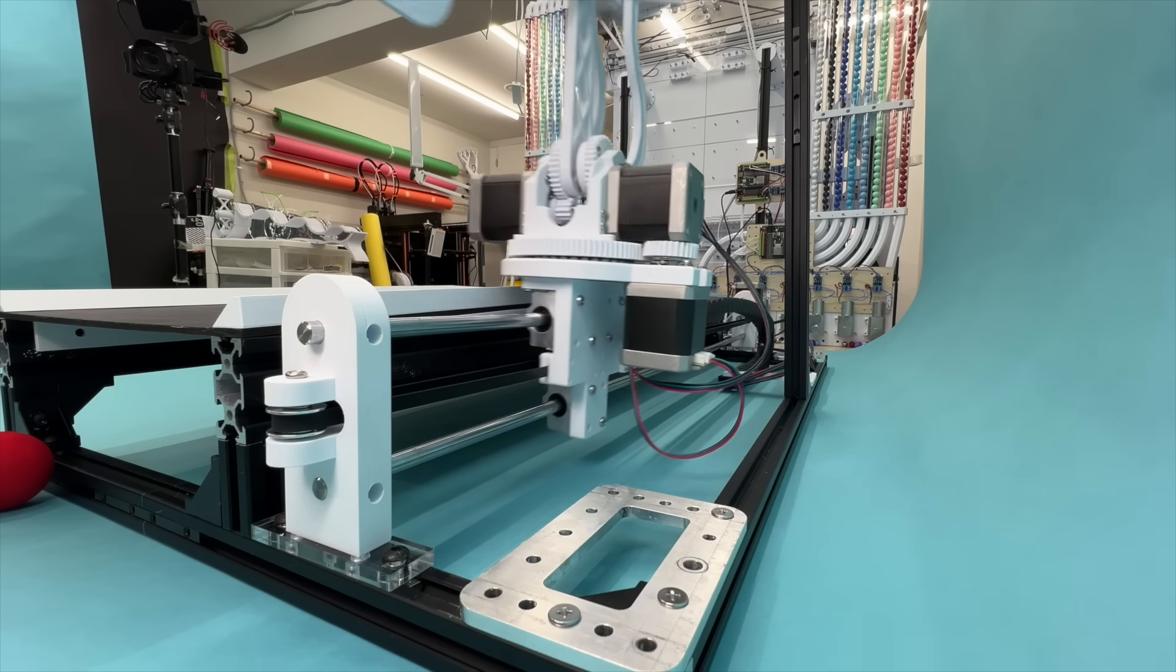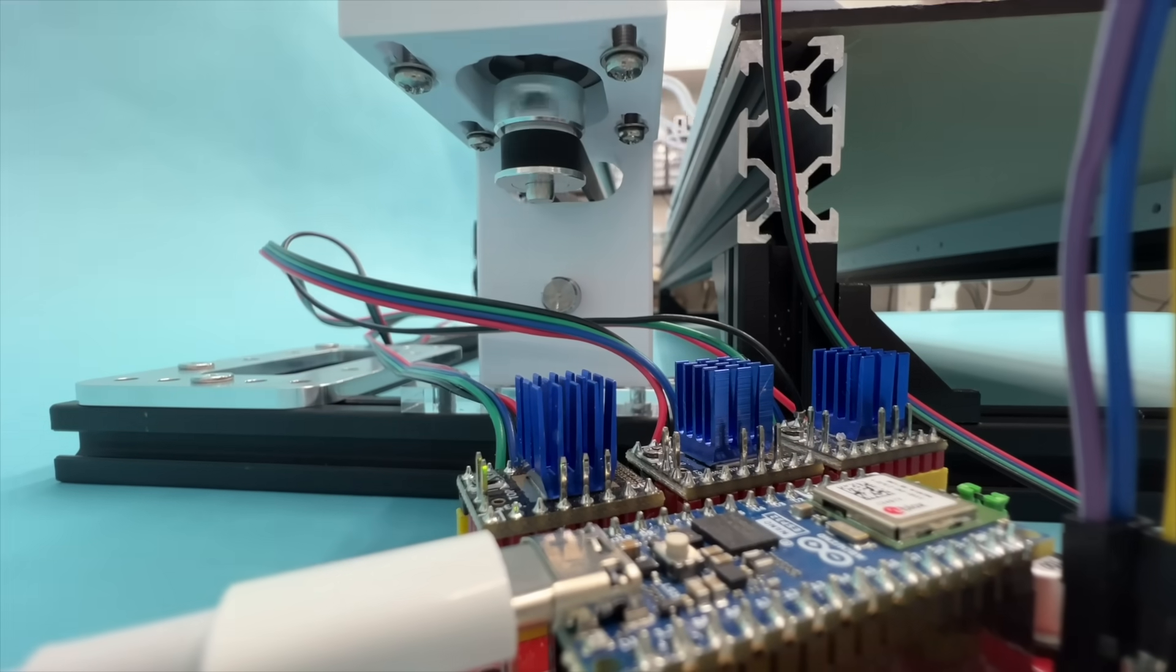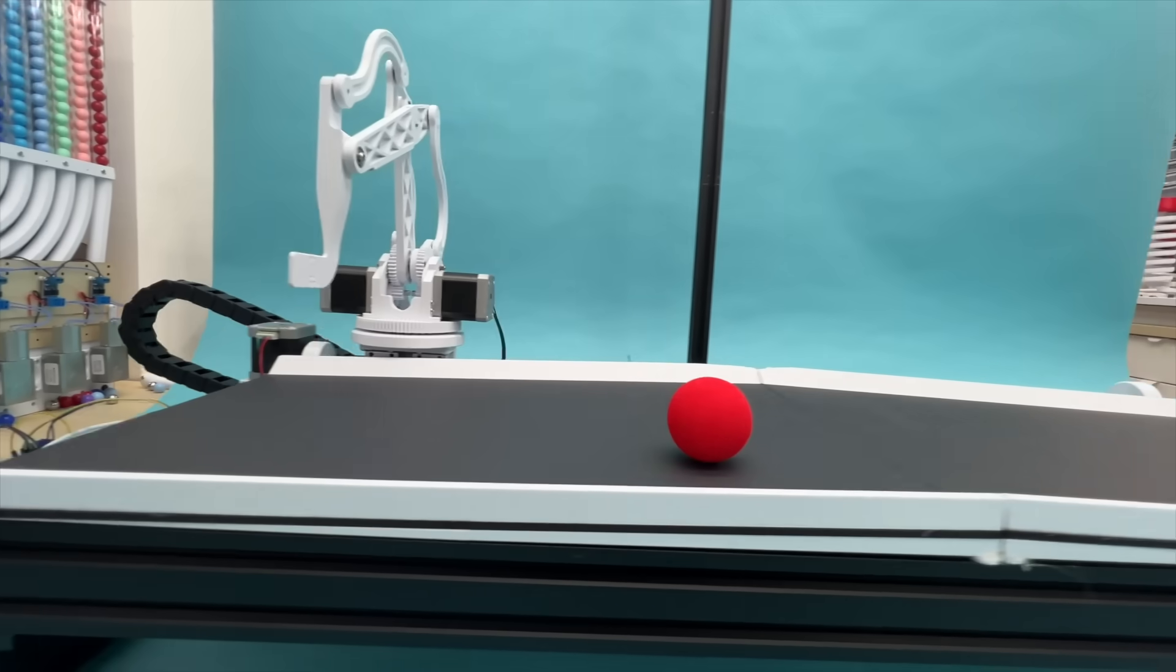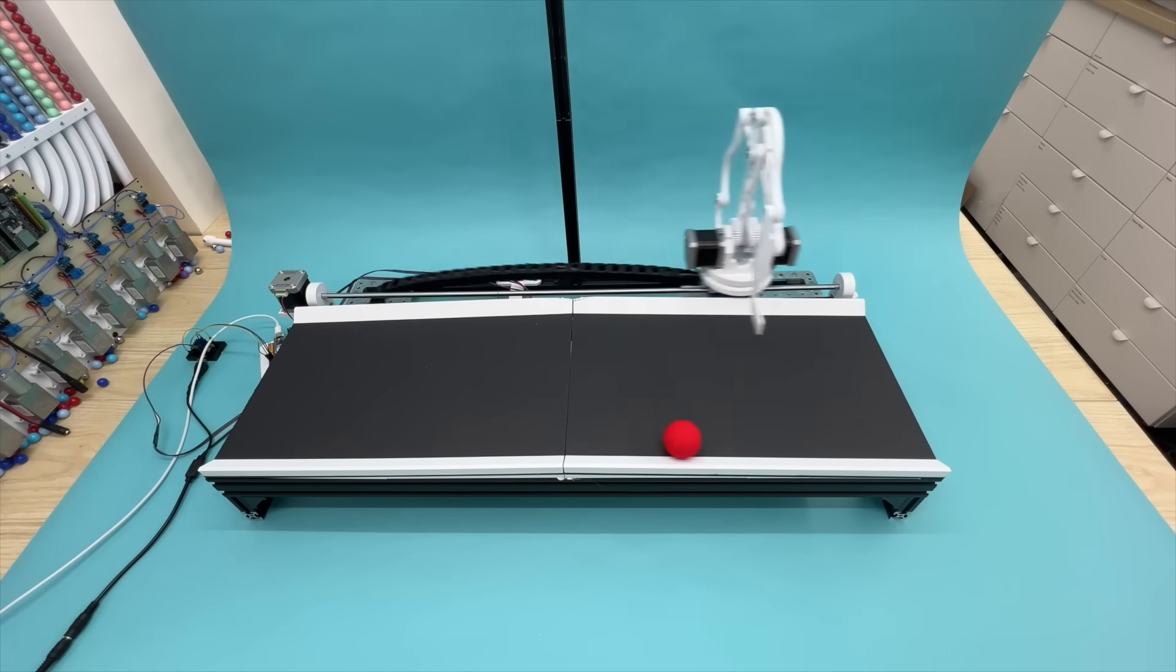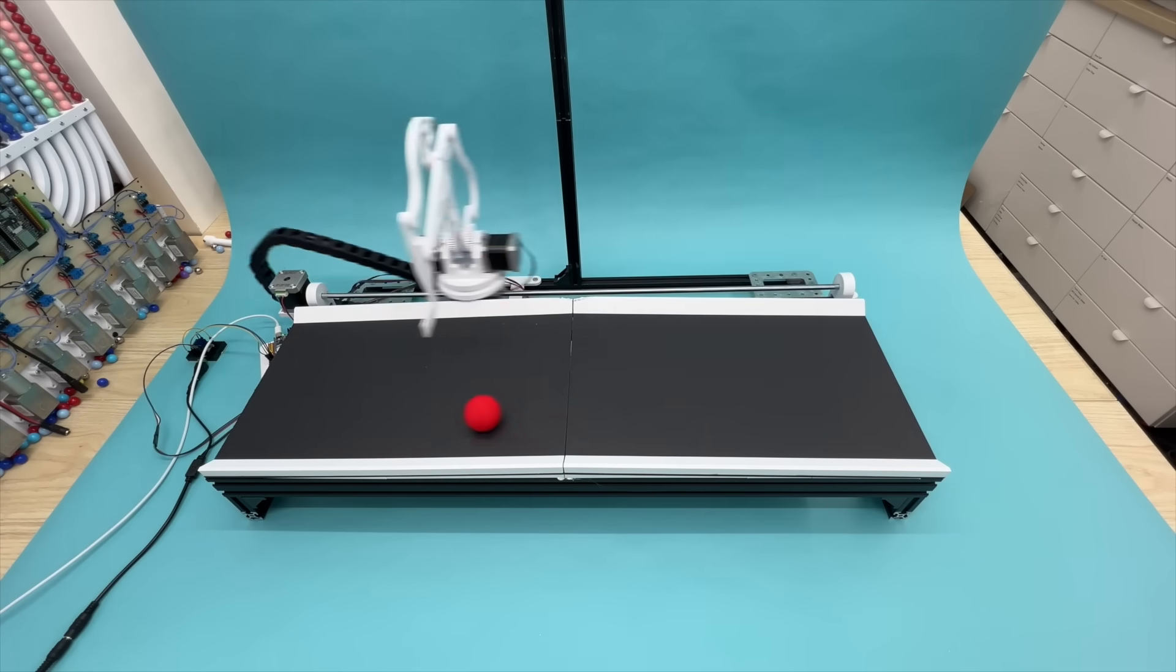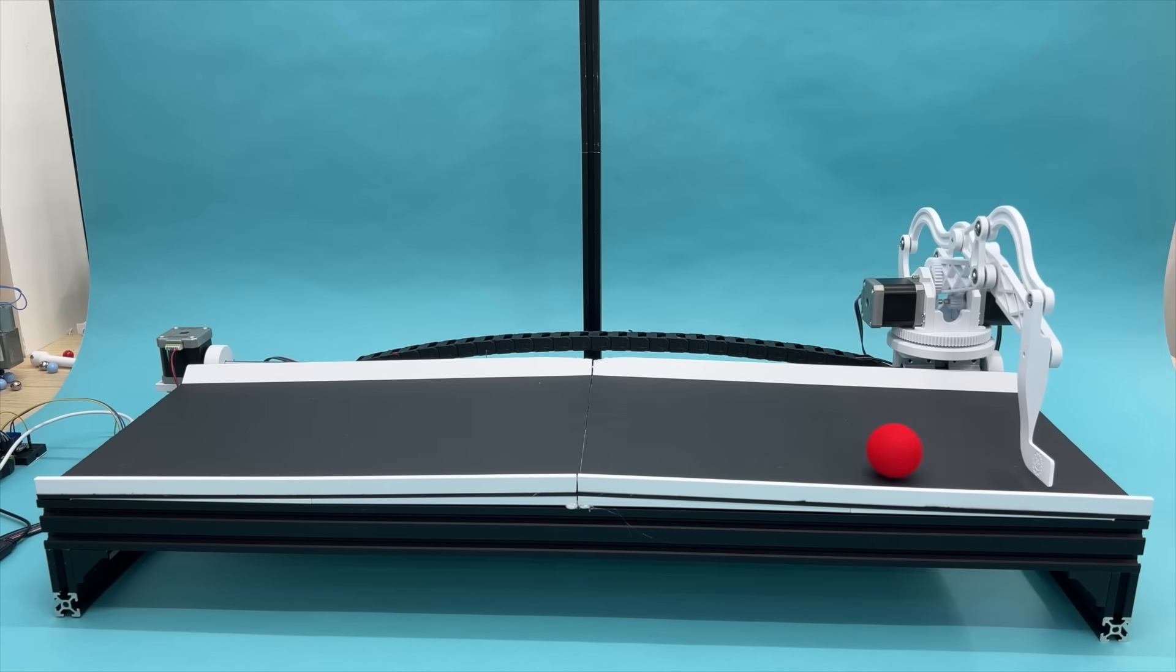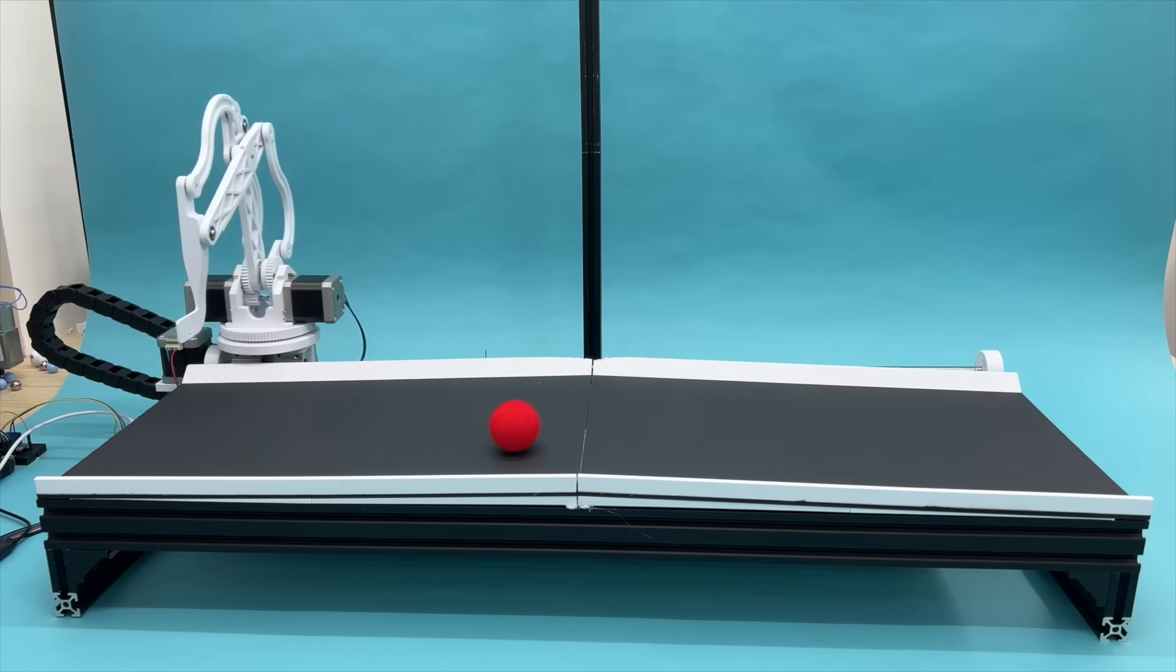When it all comes together, the result is mesmerizing and honestly a modern marvel that can't be taken for granted. The camera tracks the ball's movement, the Python script calculates its position, and the robot arm intercepts and returns the ball in an endless loop. The arm was designed using advanced software, printed using advanced machines, powered by advanced hardware, and the code was only possible for a mechanical engineer to figure out using artificial intelligence.